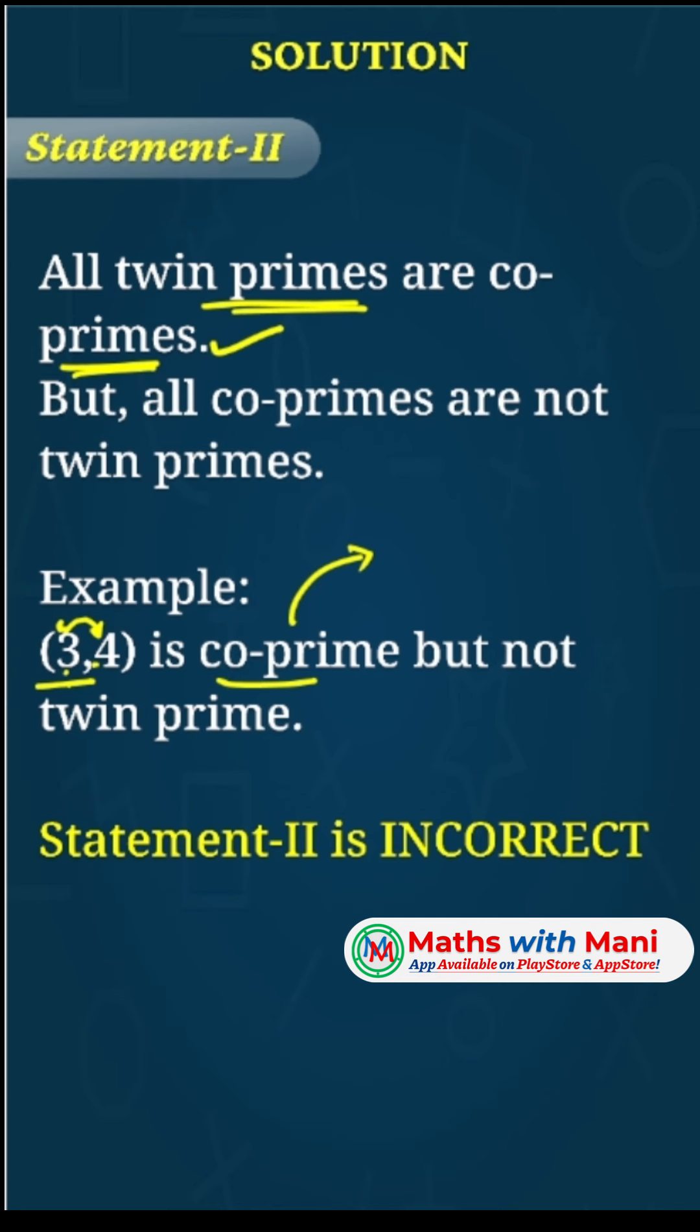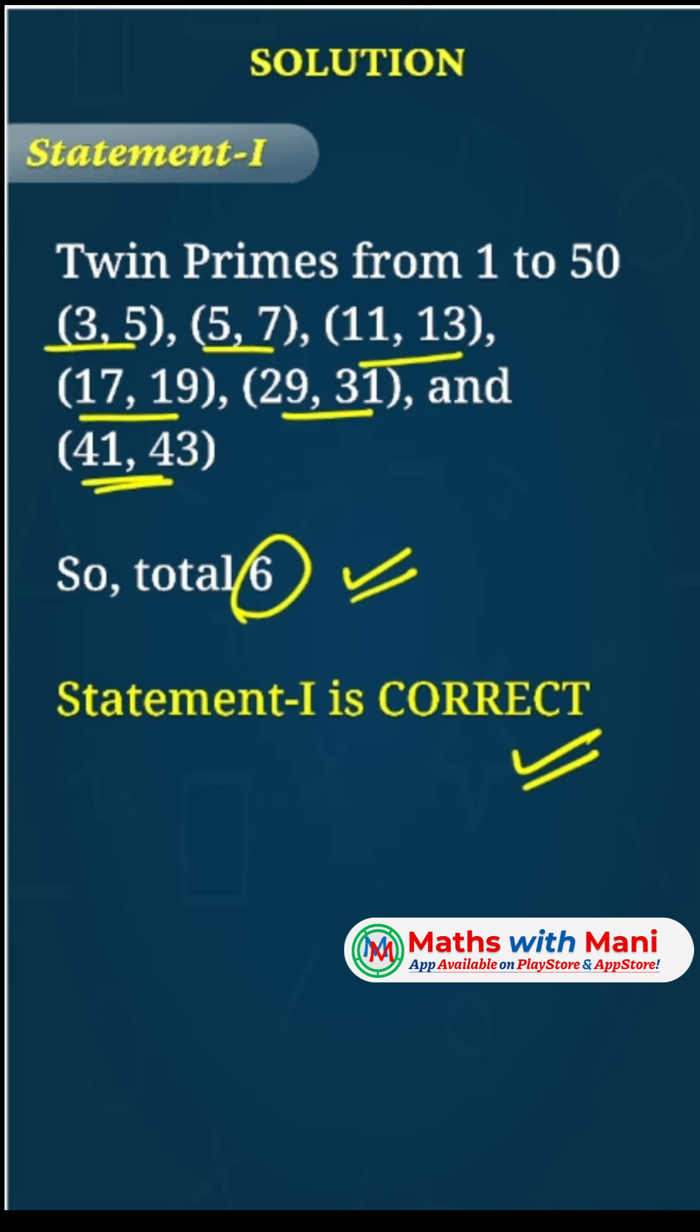In the example 3,4, the HCF of these two numbers is 1, so they are co-prime. But these are not twin prime numbers because twin prime numbers should be prime numbers and the difference between them should be 2. Since 4 is not a prime number, there are many such examples. Therefore, statement 2 is incorrect.